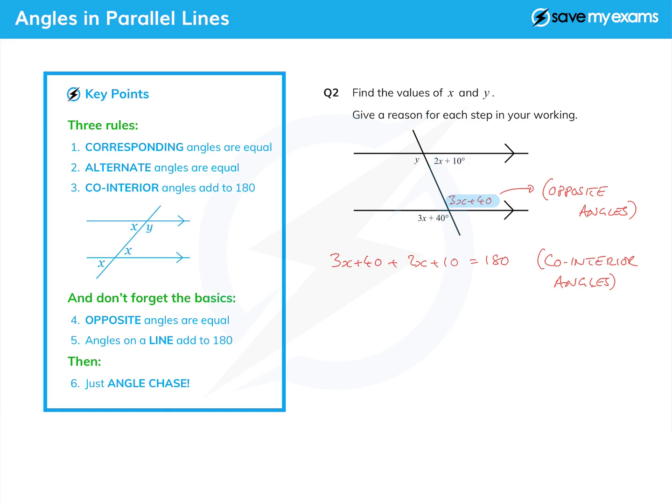That just gives me a little equation to solve. Let's lump everything together - put the 3x and the 2x together, that gives me 5x. Then the 40 and the 10 give me 50. So 5x plus 50 equals 180.